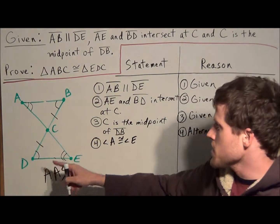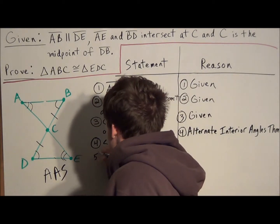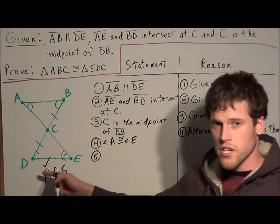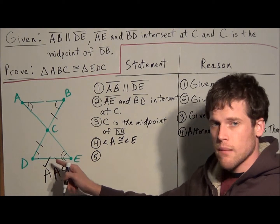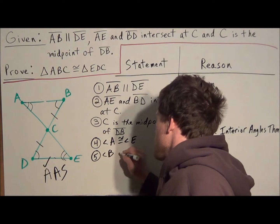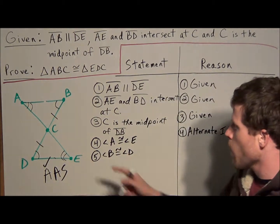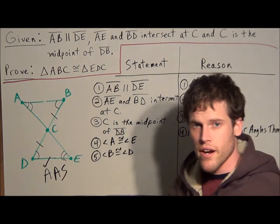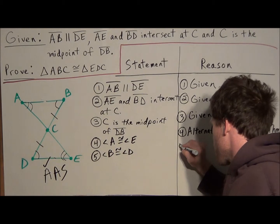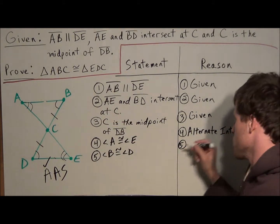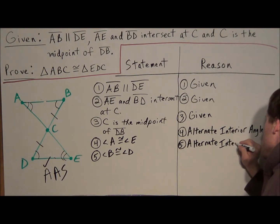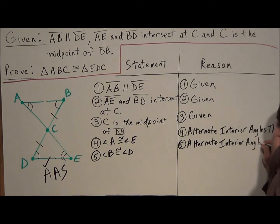Next, we establish our second pair of congruent angles: angle B is congruent to angle D. These are also alternate interior angles, formed by parallel lines AB and DE with transversal BD. So we write the same reason: the alternate interior angles theorem. We've now established both pairs of congruent angles.